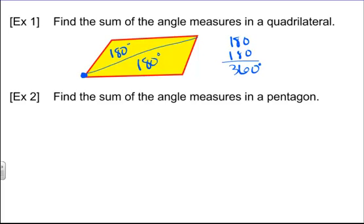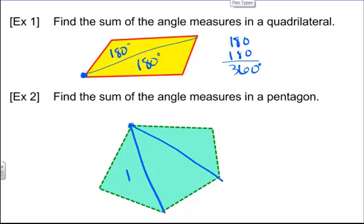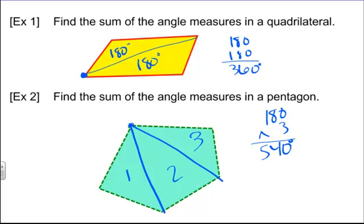For number two, let's find the sum of the angle measures in a pentagon — it doesn't matter what kind. Draw a pentagon, pick one vertex, and draw triangles from it. You get three triangles. Each triangle is 180 degrees, so 180 times 3 equals 540 degrees. Every pentagon has a total of 540 degrees — the sum of all the angles.